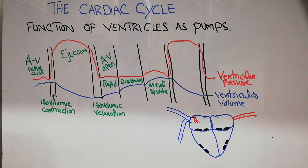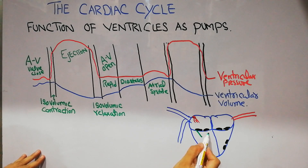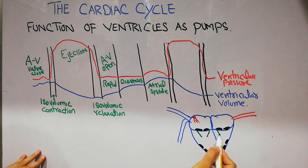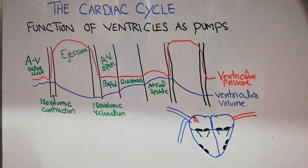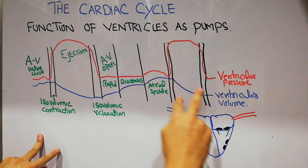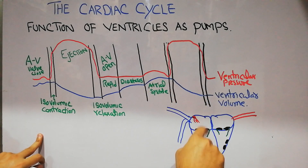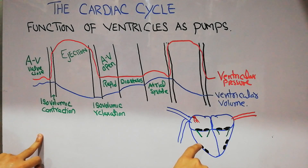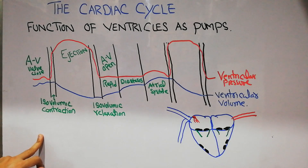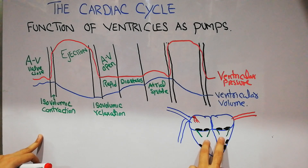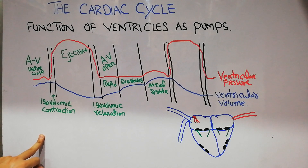These valves open in a downward direction because if pressure is greater on the atrial side, they will open toward the lower side. When the atrioventricular valves open, blood from the right atrium goes to the right ventricle and blood from the left atrium goes into the left ventricle. This causes filling of the ventricles.